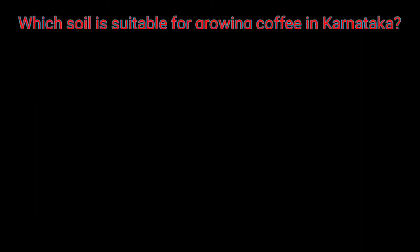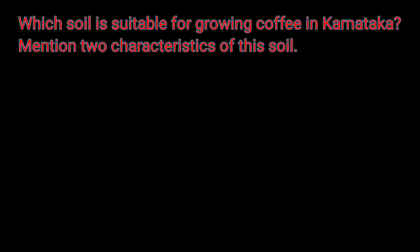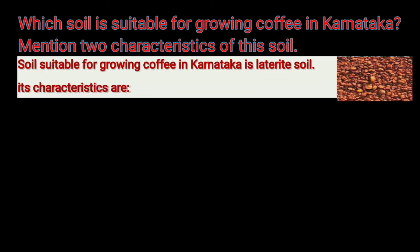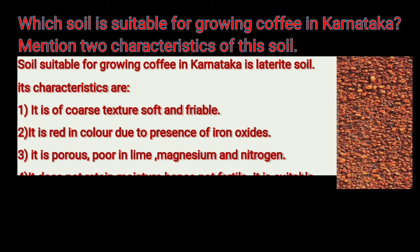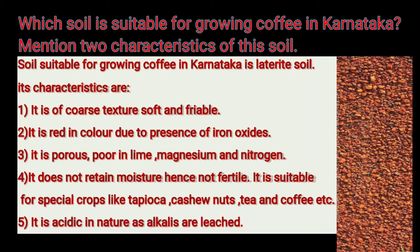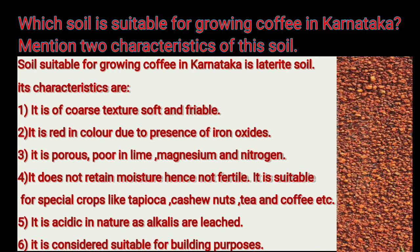Which soil is suitable for growing coffee in Karnataka? The soil suitable for growing coffee in Karnataka is laterite soil. Its characteristics are: it is of coarse texture, soft and friable. It is red in color due to the presence of iron oxides. It is porous, poor in lime, magnesium, and nitrogen. It does not retain moisture, hence it is not fertile. It is suitable for special crops like tapioca, cashew nuts, tea, and coffee. It is acidic in nature as alkalis are leached, and it is also considered suitable for building purposes.